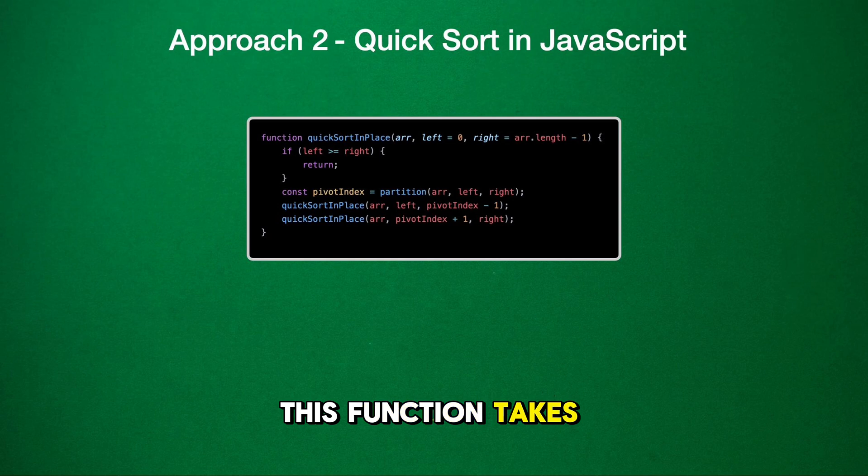First, let's look at the complete function, quick sort in place. This function takes three arguments. R, the array you want to sort. Left, the starting index of the array segment you want to sort. And right, the ending index. If you don't provide left and right, they default to zero and the last index of the array, respectively, meaning it will sort the entire array.